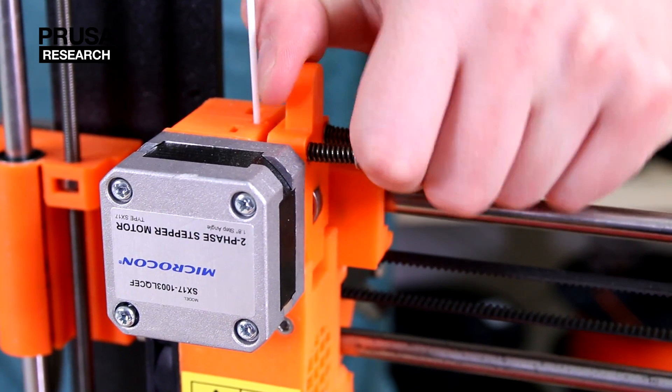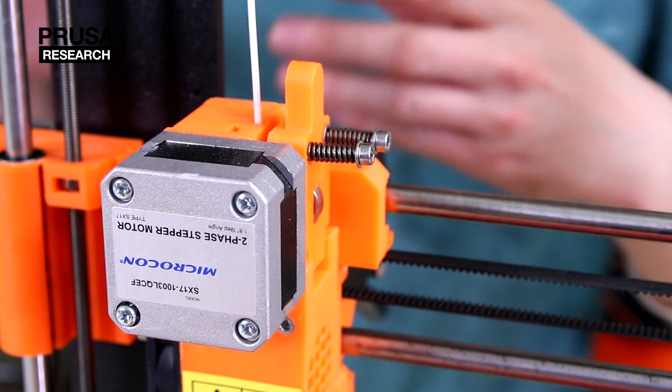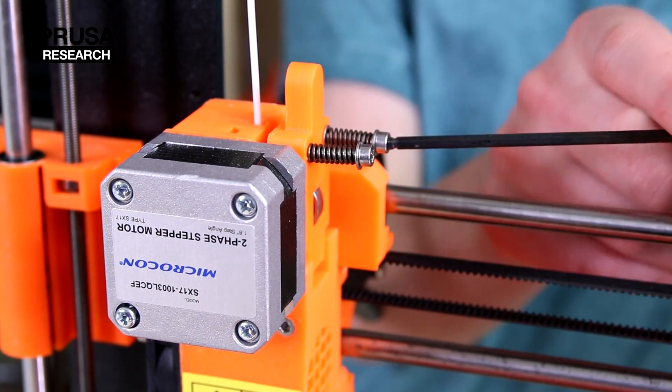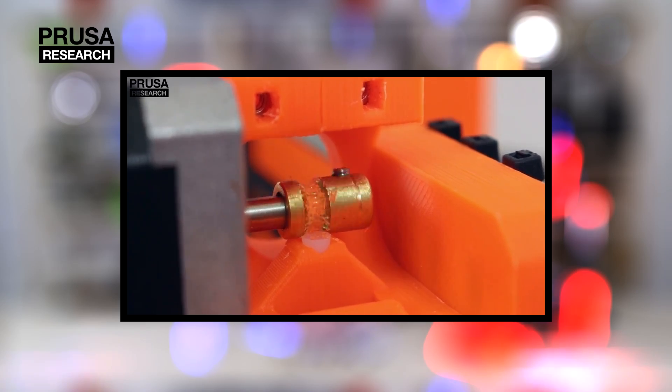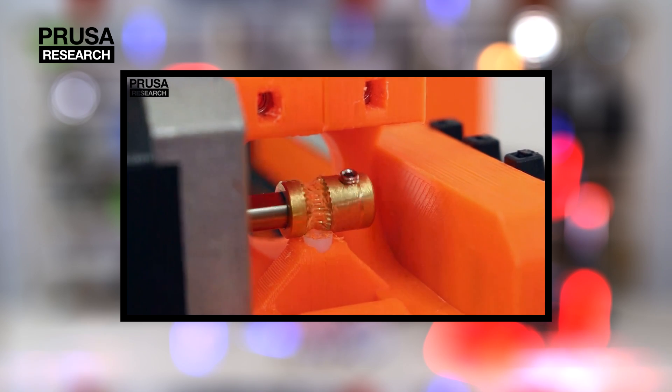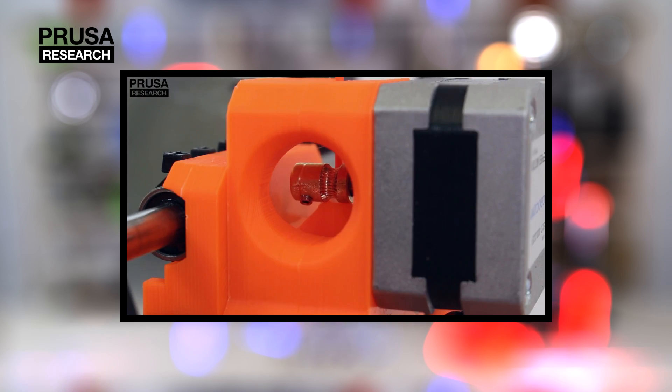Next step is to check thrust on the hopped pulley. Find the optimal tightening of the idle bearing springs. Bad filament extrusion may be caused by clogged hopped pulley or its wrong position on the motor shaft. Tutorial how to clean it is in our previous video.